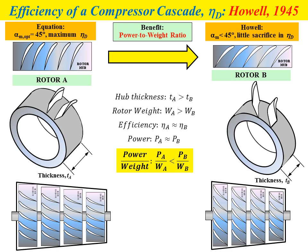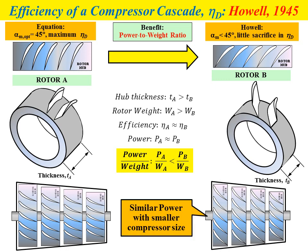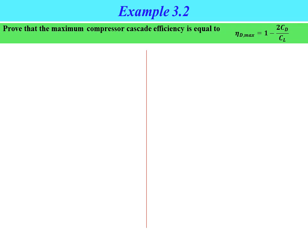This is the importance of power-to-weight ratio and why Howell suggests using alpha_m lower than 45 degrees. We get almost similar efficiency but can significantly reduce the size of the compressor. We achieve similar compressor power with a smaller compressor size by using alpha_m slightly lower than 45 degrees, even though the cascade efficiency is slightly lower than at alpha_m equal to 45 degrees.